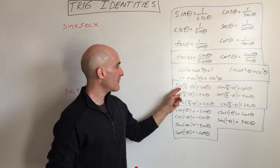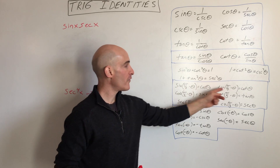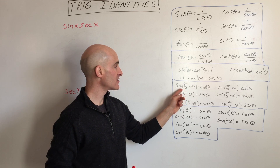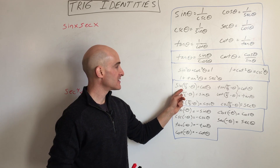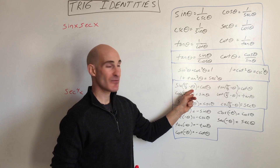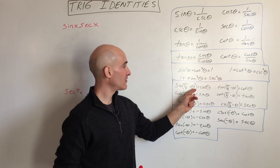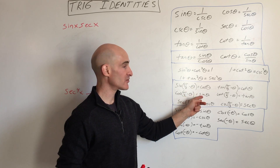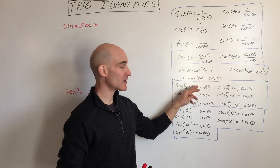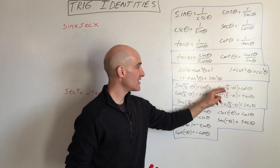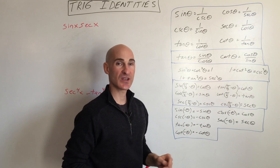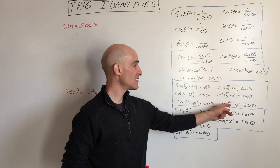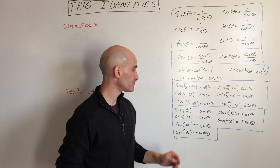Here we have the co-functions. You can pair these up: sine of 90 minus the angle equals cosine, and cosine of 90 minus the angle equals sine. So sine and cosine are co-function pairs. Tangent and cotangent are co-function pairs, and secant and cosecant go together.